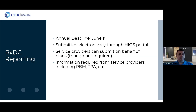Whether your carrier or PBM will do this depends on the carrier and their process. But ultimately, it is going to be the plan's responsibility to make sure this is being filed. If the carrier or PBM are not submitting this information on behalf of the plan, the plan must take care of that. The annual deadline for this reporting is June 1st of every year. This must be submitted electronically through the HIOS portal.